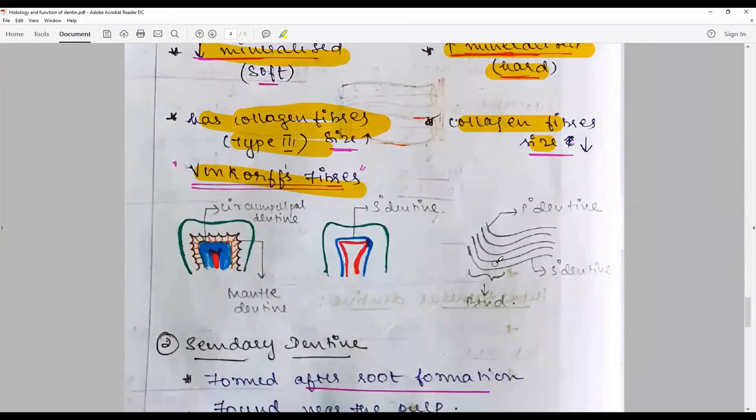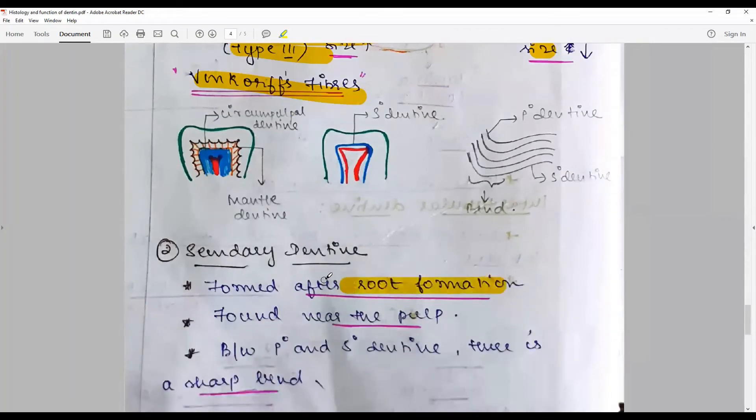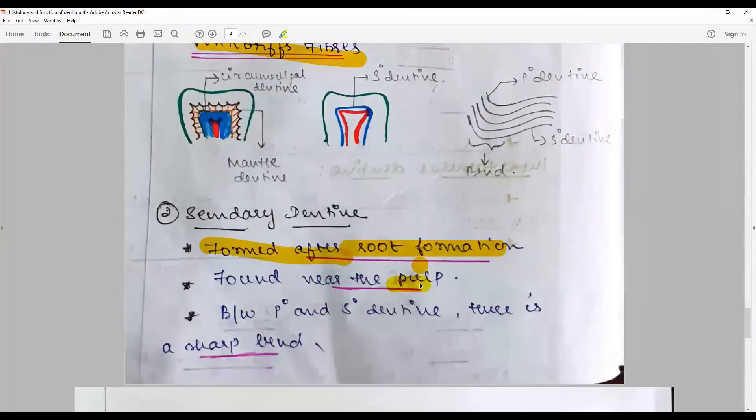After root completion, secondary dentin is formed nearer to the pulp. Between the primary and secondary dentin there is a sharp bend called Schreger's line.